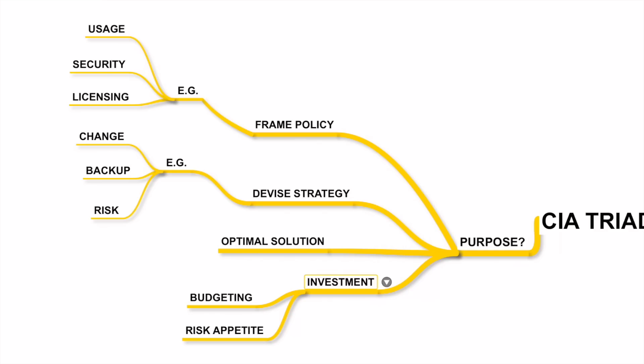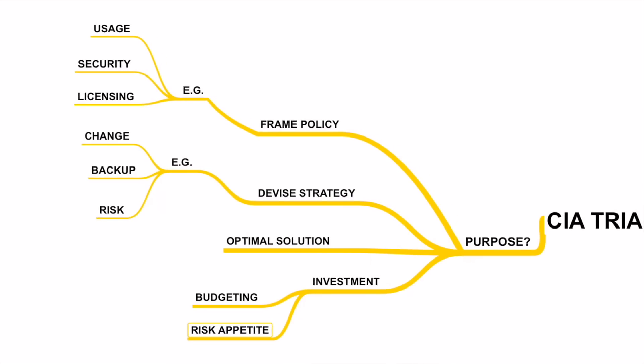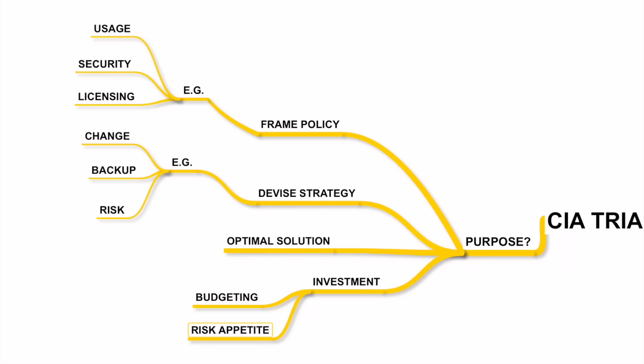CIA greatly affects the IT investment strategy of an organization. To achieve laid-down policy guidelines and to align IT with business strategy, optimal solutions will need to be provided, and this would mean proper investment in the right direction. CIA must be considered in the creation of periodic budgets. The level of investment approved by stakeholders depends a lot on their risk appetite — a rejection of a business case would also mean that stakeholders are accepting the underlying risk that comes with it.